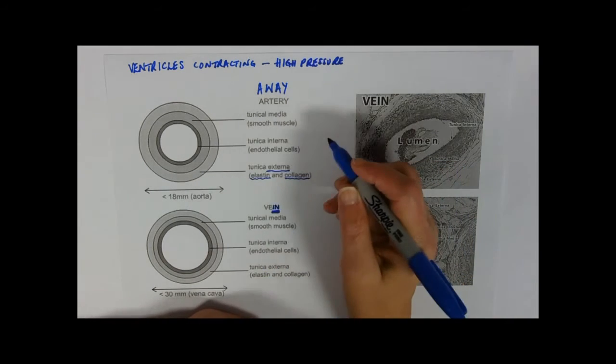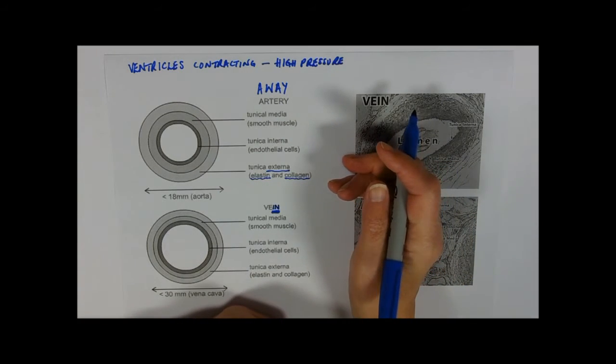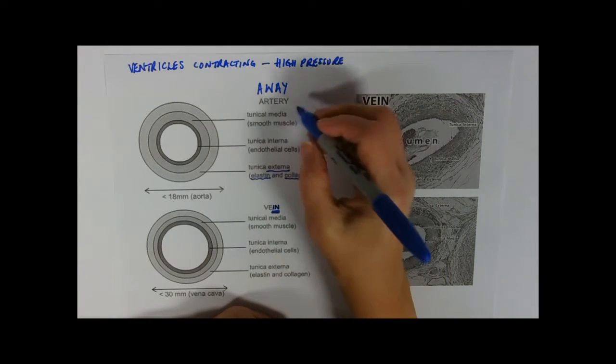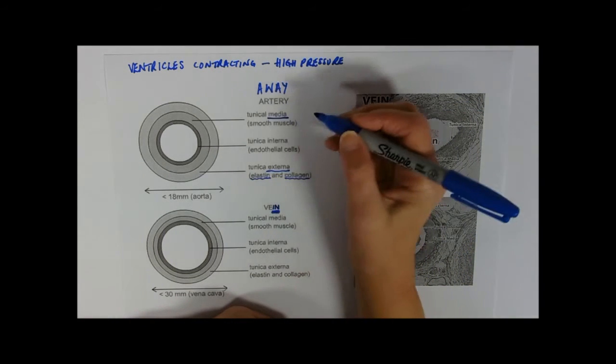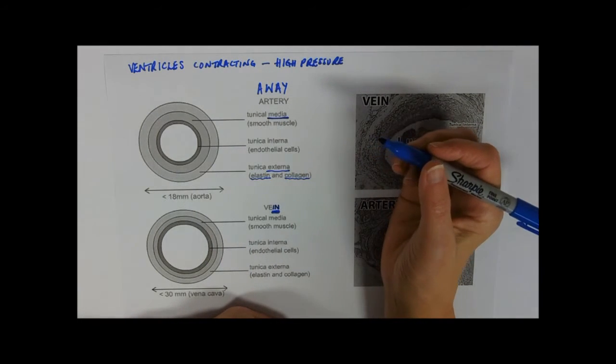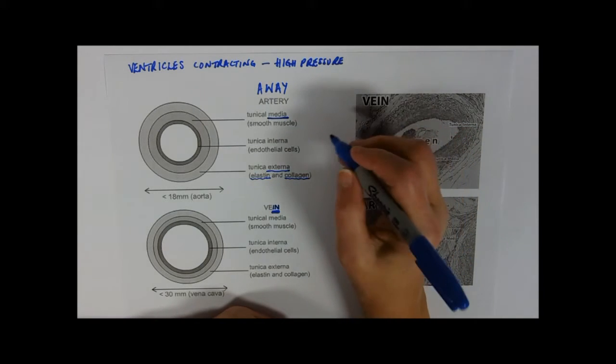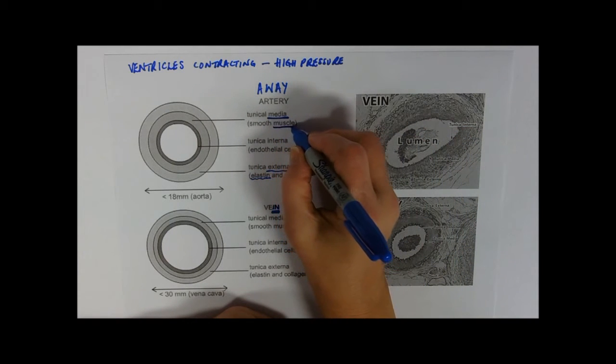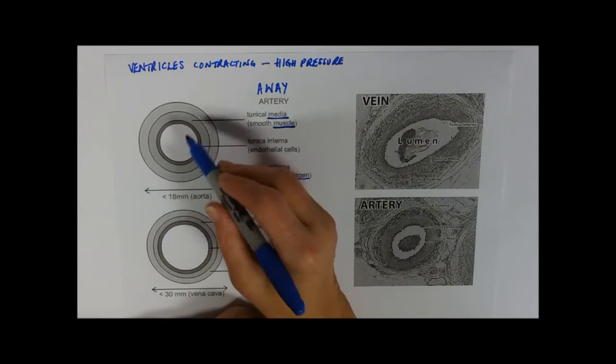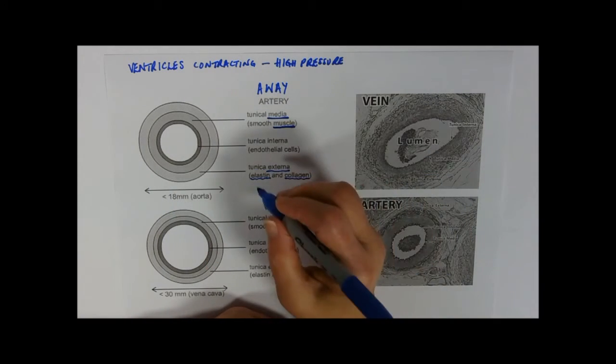We then have a tunica media, media because it's in the middle, and that's made mainly of smooth muscle and again some elastic tissue. So we've got muscle tissue in there as well. And then we've got the tunica interna.